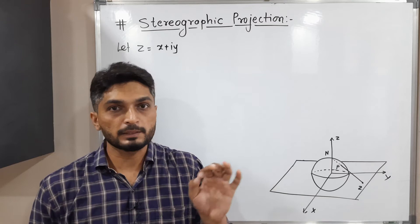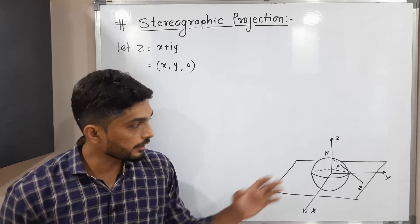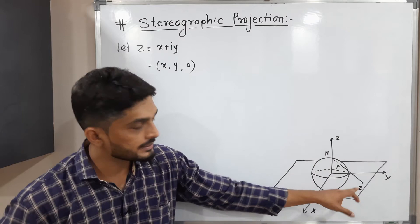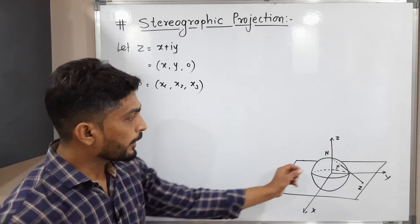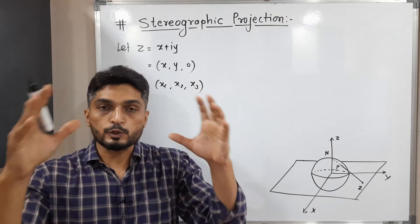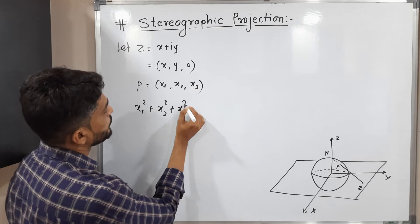Since z is also a member of R³, we can write it as (x, y, 0). We also have a point P — if you join N and z, that line cuts the sphere at point P, so the coordinates of that point will be (x₁, x₂, x₃). Point P lies on the sphere, so it satisfies the equation of the sphere: x² + y² + z² = 1. Therefore x₁² + x₂² + x₃² = 1. We call this equation number one — a very important result.